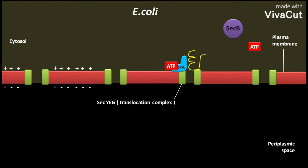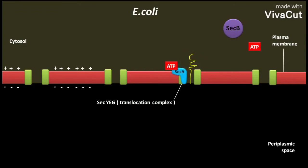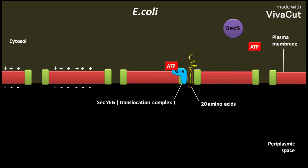SECA inserts itself into the plasma membrane. This insertion forces about 20 amino acids of the protein to be exported through the translocation complex.